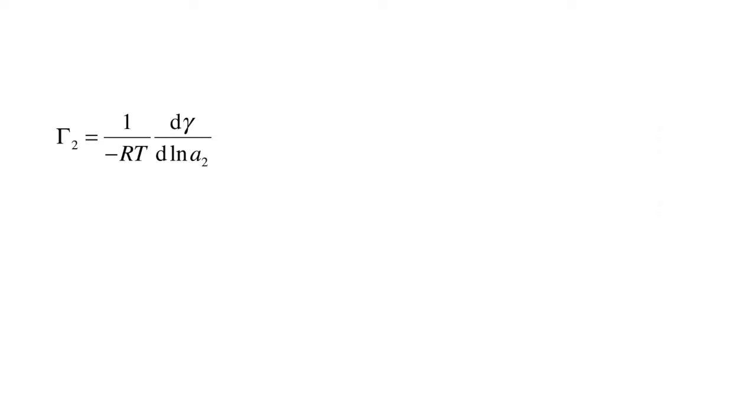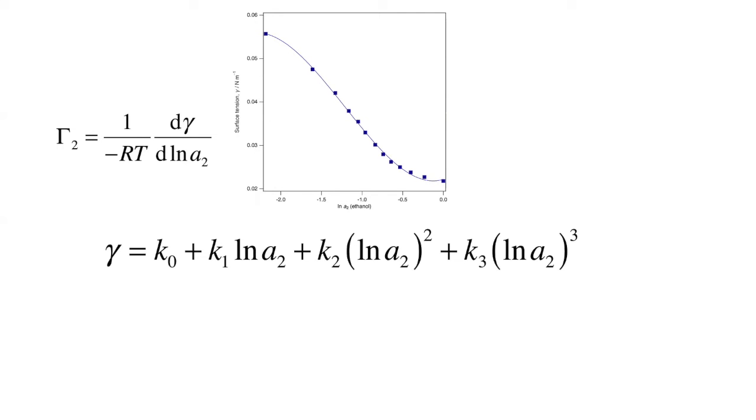So we need to determine the derivative of surface tension versus the natural log of A2. How are we going to do that? The derivative is a slope. That is, if we plot surface tension of the mixture versus the natural log of the activity of ethanol, we see a nice smooth curve. In fact, you're told you should fit a third order polynomial to this data.